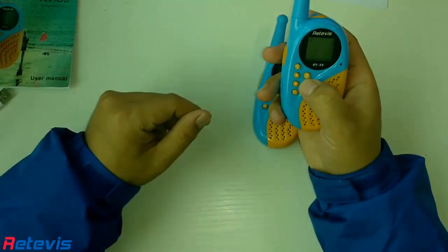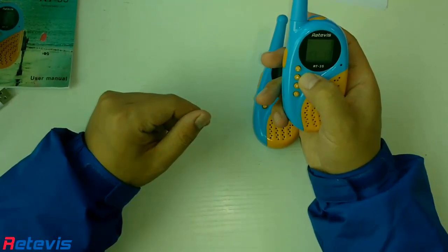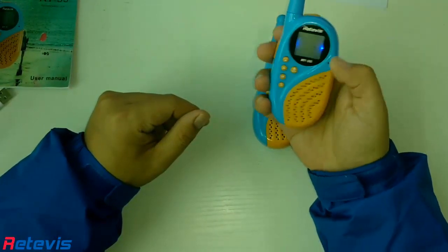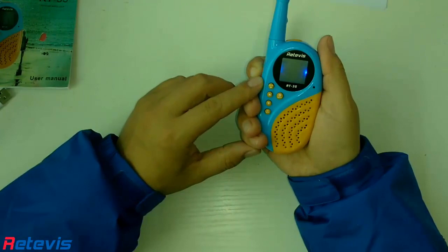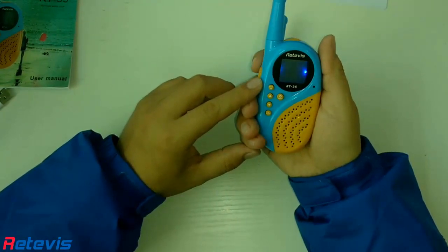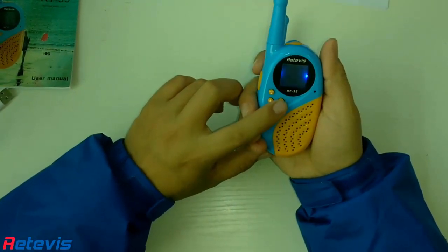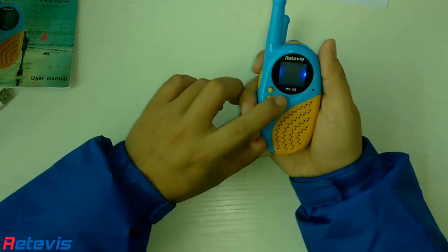It has 38 analog sub-audio and 83 digital sub-audio codes. When you and your partner set up the same sub-audio, that is only for you and your partner. You won't receive other unrelated voices.